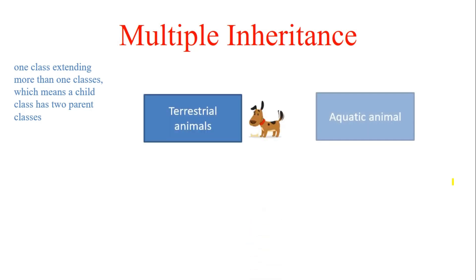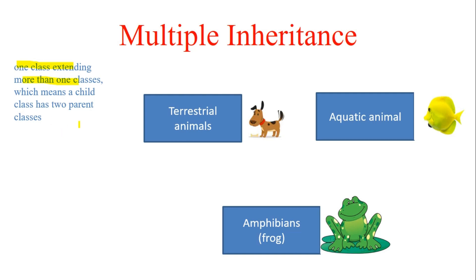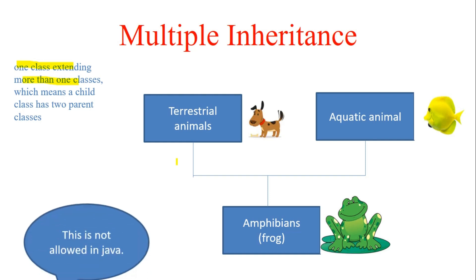Multiple inheritance is where one class extends more than one class. For example, Amphibians can be considered as extending both Terrestrial Animals and Aquatic Animals. Amphibians can live both on land and in water, whereas Terrestrial Animals live only on land and Aquatic Animals live only in water. This is important from an interview perspective because multiple inheritance is not supported in Java.